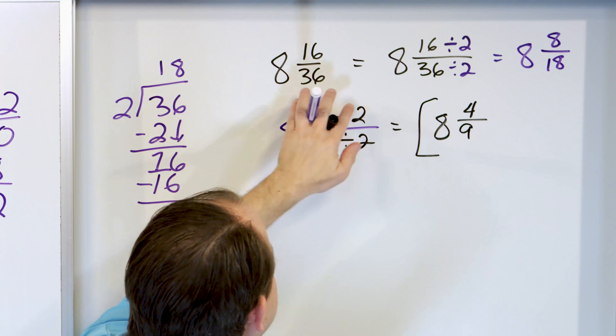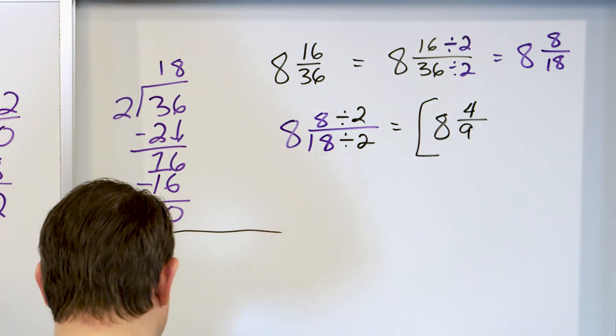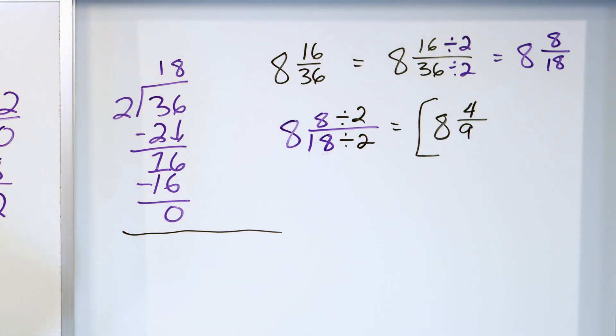8 and 4/9ths is exactly the same thing as 8 and 16/36ths. Now we are on our very last problem.